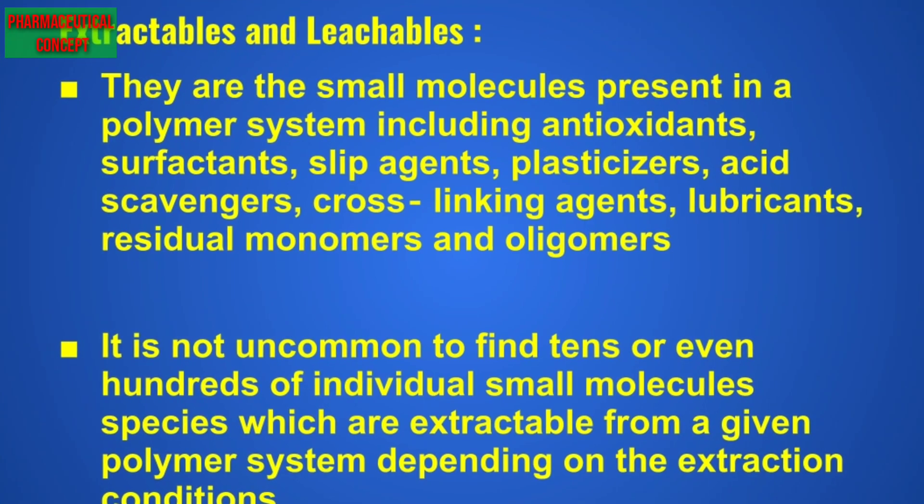Extractables and Leachables are small molecules present in the polymer system, including antioxidants, surfactants, slip agents, plasticizers, acids, scavengers, cross-linking agents, lubricants, residual monomers and oligomers. It is not uncommon to find tens or even hundreds of individual small molecule species which are extractable from a given polymer system depending on the extraction conditions.